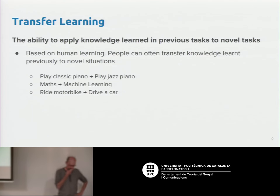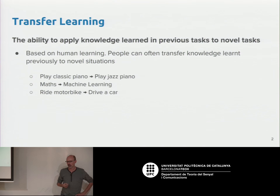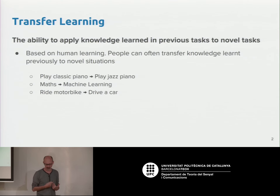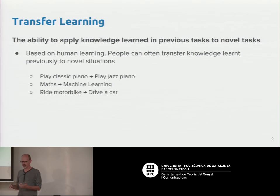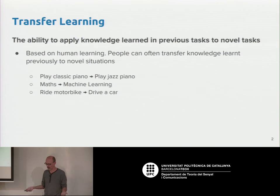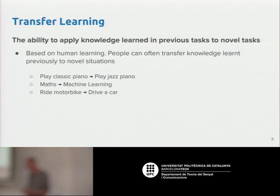The idea is that when we learn knowledge in a deep learning approach, or when we humans learn something, we don't learn every new thing from scratch. We rely on our previous knowledge. For instance, if I know how to play classic piano, I will probably learn jazz piano faster than a person who does not know how to play piano at all. If I have a background on some aspect, this will help me to learn new things.